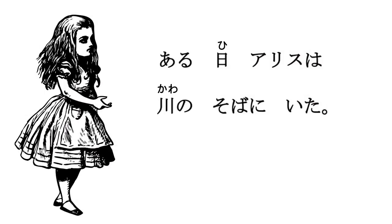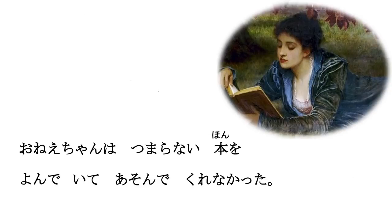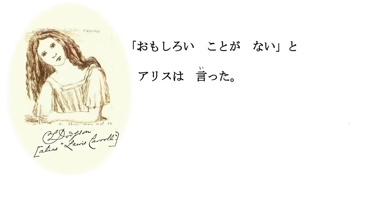Aruhi, Arisu wa kawano soba ni ita. One day, Alice was by the river. Oneechan wa tsumaranai hon wo yonde itte, asonde kurenakatta. Big sister was reading a boring book and did not play with Alice. Omoshiroi koto ga nai, to Arisu wa itta.